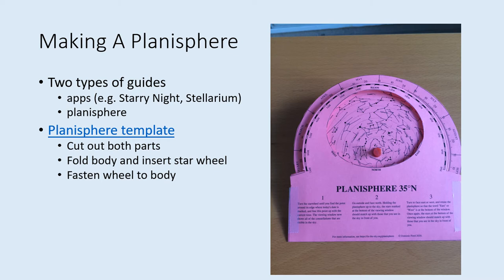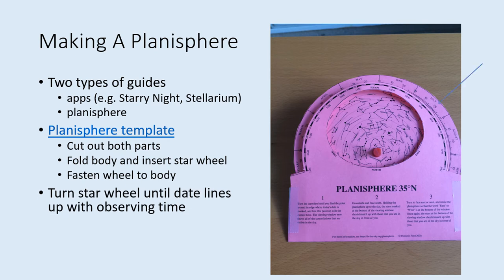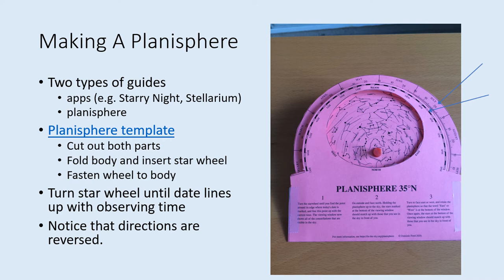To use the planisphere, turn the star wheel so that the date you are observing lines up with the time you observe on the body. Notice that the directions labeled on the body look reversed from what you're probably used to. If north is at the top, then west is to the right rather than the left. That's because this is designed to look up at the sky rather than down at the ground. If you hold it up over your head, then you'll see the directions really do line up the way they should.